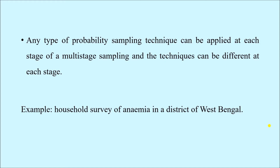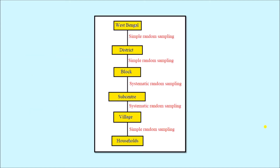Here is an example where we have conducted a household survey of anemia in the district of West Bengal. In any state we have different districts; within the district we have different blocks and municipalities; in the block we have sub-centers; and under the sub-center there are multiple villages; and in individual villages there are multiple households. From the state of West Bengal we can select any particular district by simple random sampling, then from the district we can select the blocks by simple random sampling, then select the sub-centers by systematic random sampling.